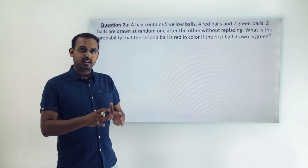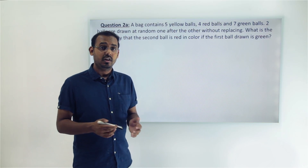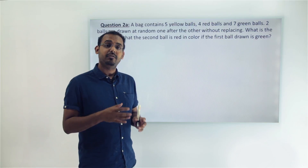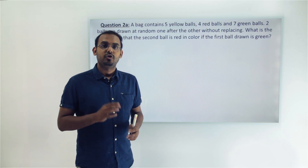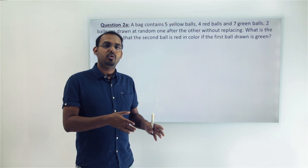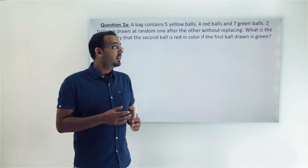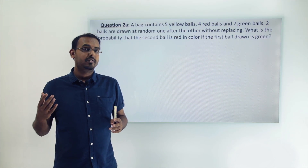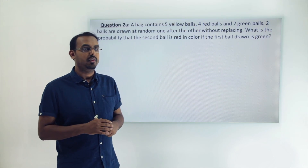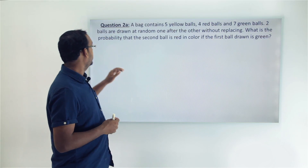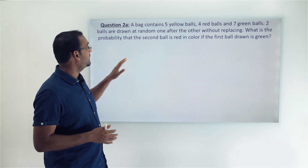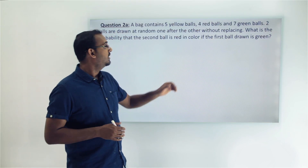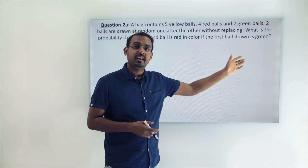What does 'without replacing' mean? It means from the bag with 16 balls, we take out one ball and find that it is green in color. We keep this ball aside and then draw another ball from the bag — a different ball than the one kept aside. We do not replace the first ball before drawing the second. The question asks us to find the probability that the second ball drawn is red, given that the first ball drawn was green.